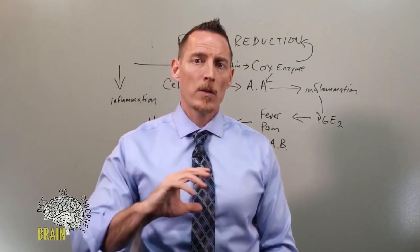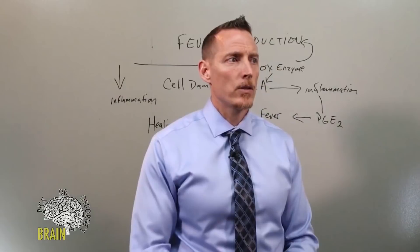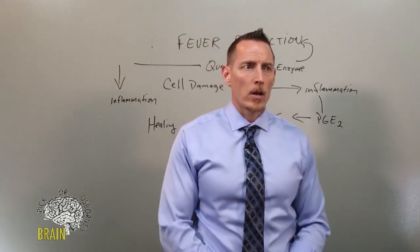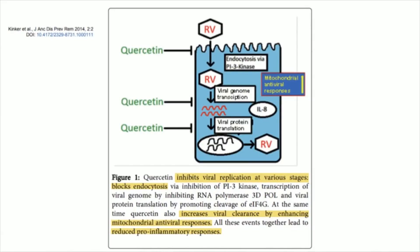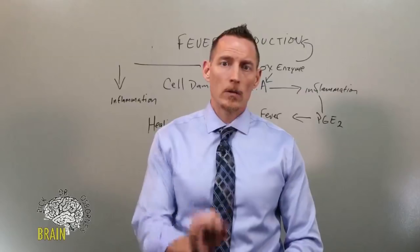There is a potential antiviral and anti-inflammatory mechanism that quercetin has already shown in both human and in vitro studies. Looking at the next slide from the same article, quercetin has multiple effects: number one, it inhibits viral replication at various stages; number two, it blocks endocytosis — meaning it blocks the virus's ability to get into the cell; number three, it increases viral clearance by enhancing mitochondrial antiviral responses. Together, these also reduce the pro-inflammatory component of how the virus could affect somebody. These are already-studied benefits of quercetin on other forms of viral infections, although not yet on COVID-19.